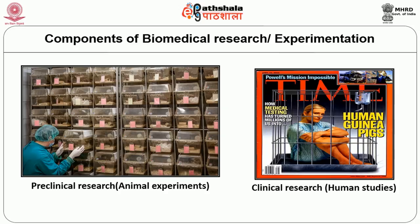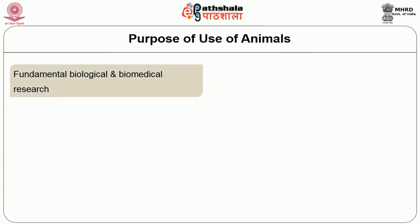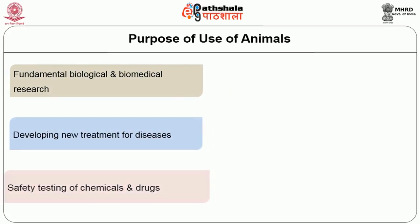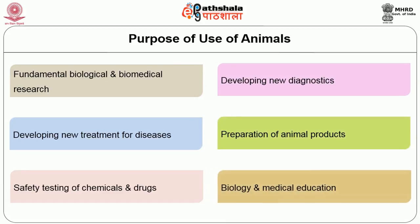Why do we use animals for research? This is something very important. There are various reasons why we use animals. The first is fundamental research, whether biological or biomedical science. If you want to develop a new treatment for diseases, you have to use animals first — try whether it is safe, whether it is efficacious — and then you do it in human beings.